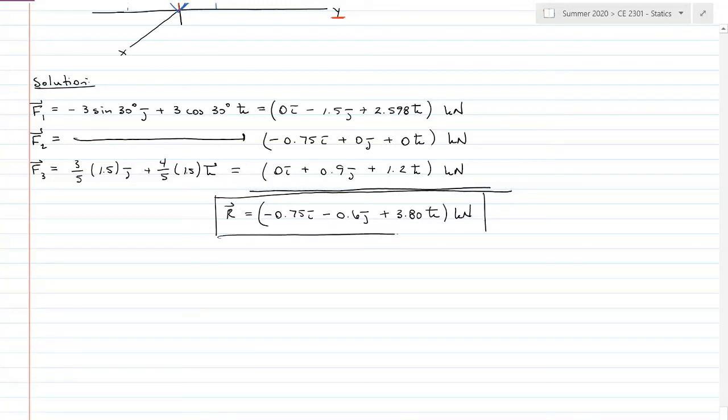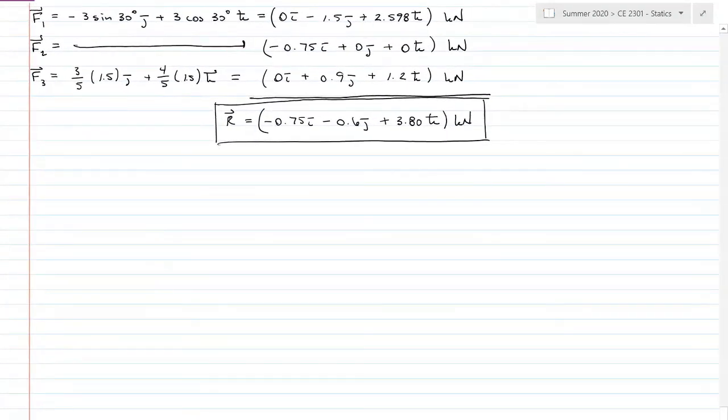We also wanted it in magnitude and direction. The magnitude of my resultant vector is the square root of the sum of the squares: negative 0.75 squared plus negative 0.6 squared plus 3.80 squared. Yes, the negative signs square out and don't matter, but I'm putting them so you can see where all my numbers came from. The magnitude for my resultant force is 3.92 kilonewtons.